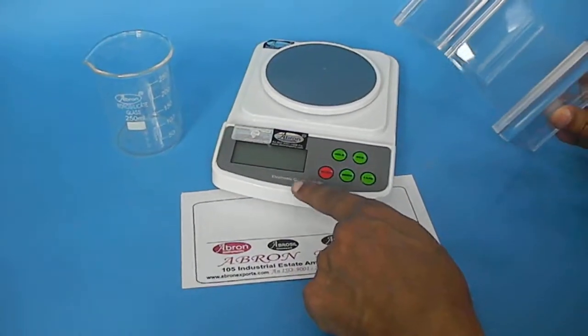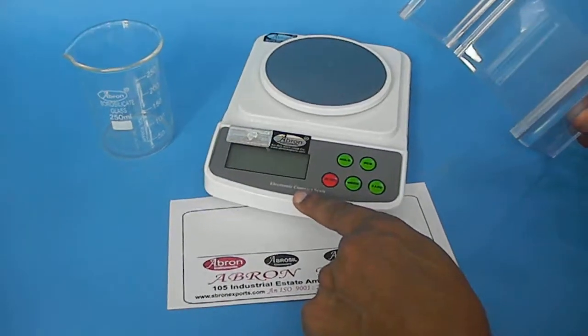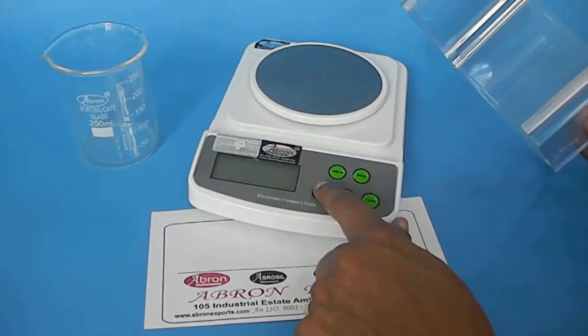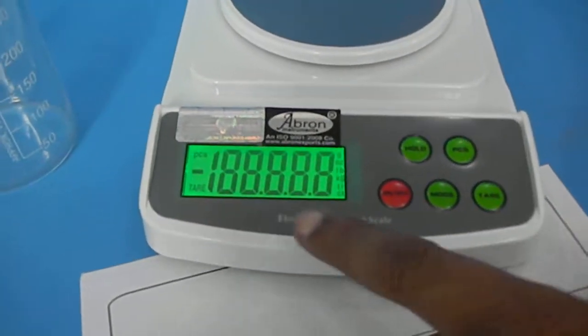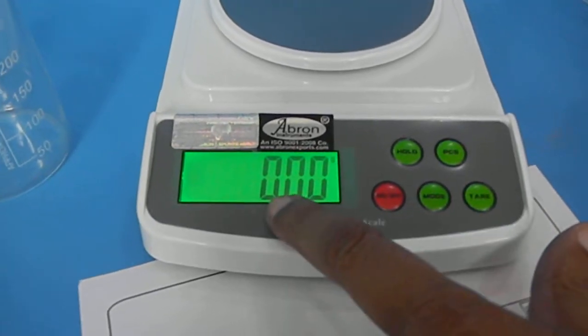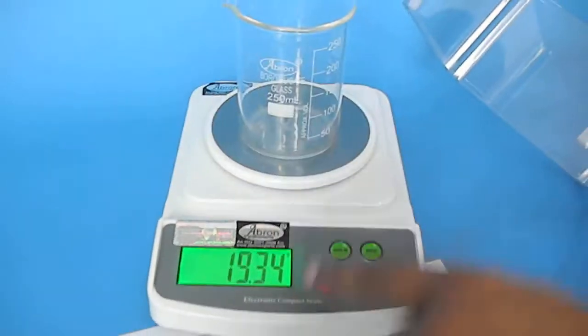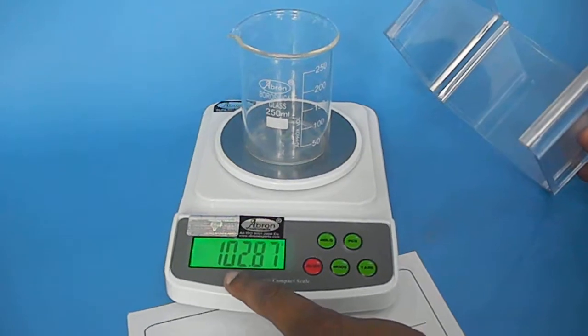This is the digital balance with 500 gram capacity and 0.01 accuracy. When you switch it on, it gives you the accuracy of 0.01. You can see now it shows 102.87.